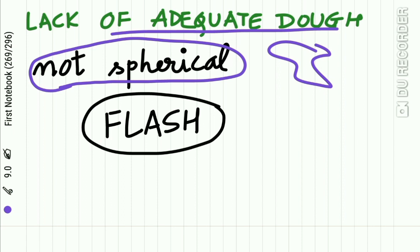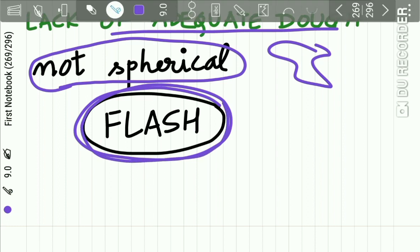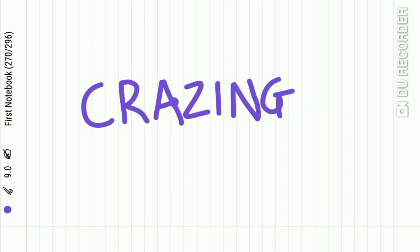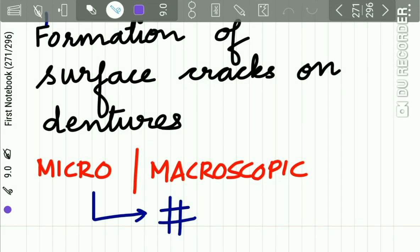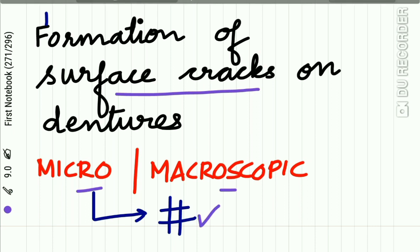Whether sufficient dough has been taken can be checked by using the flash — this was discussed in Part 2 of denture base resins. Another important exam question is: what is crazing? Formation of surface cracks on dentures is called crazing. These cracks may be microscopic or macroscopic, and they result in fracture of the dentures.